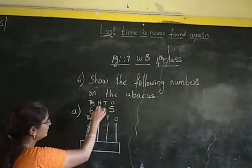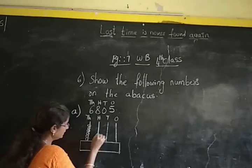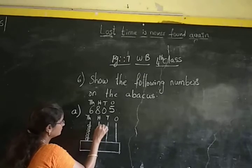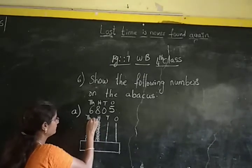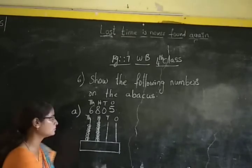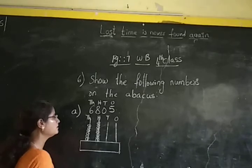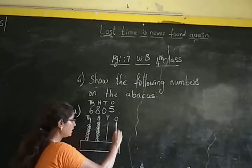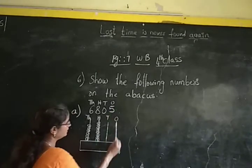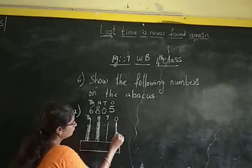In hundreds place, we are having 8, so we have to draw 8 beads. Next, in tens place we are having 0, which means no beads — no need of showing any bead in tens place because it is having 0. In ones place, you have to show 5 beads because it is given 5 in ones place.